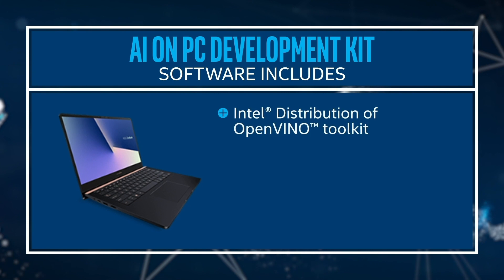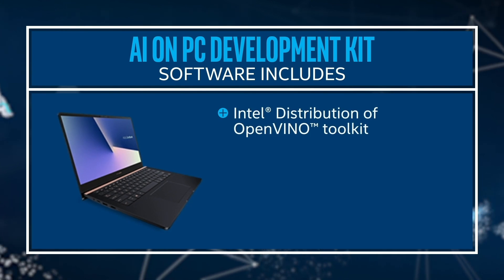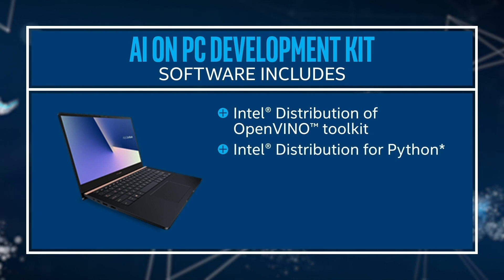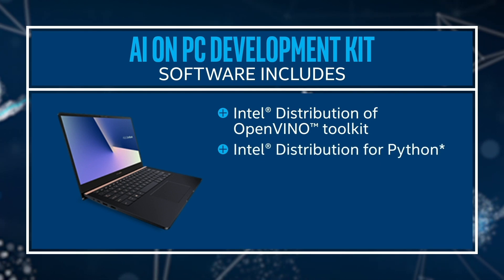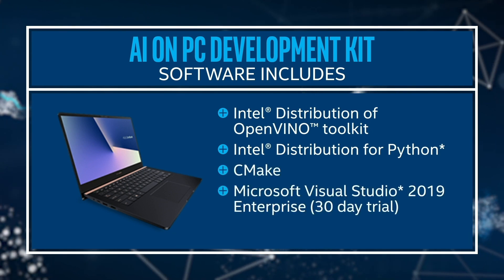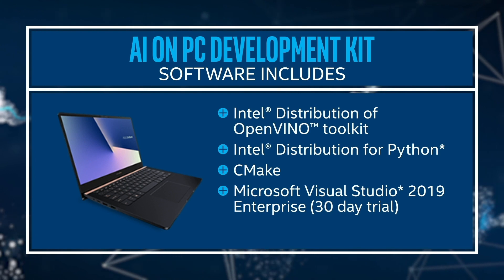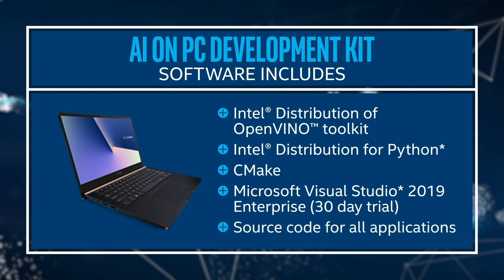The kit comes with the following software pre-installed and configured: the Intel Distribution of OpenVINO Toolkit, a toolkit for developing deep learning and computer vision applications; Intel Distribution for Python, optimized for performance on Intel architecture; CMake, a utility for building applications; a 30-day trial of Microsoft Visual Studio 2019 Enterprise; and all the source code for the applications, including what we show in this video.